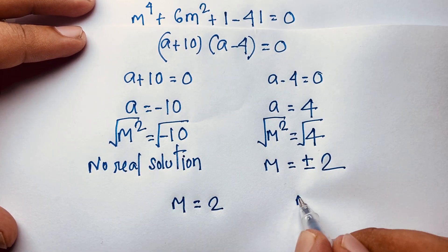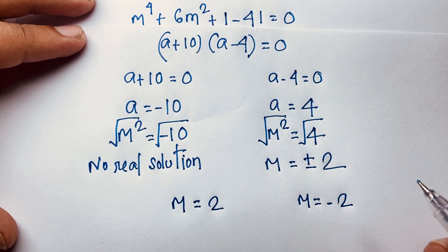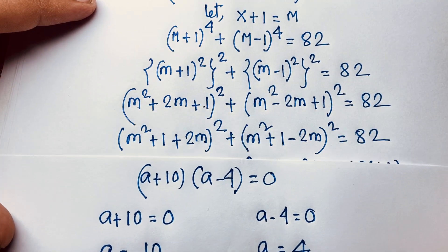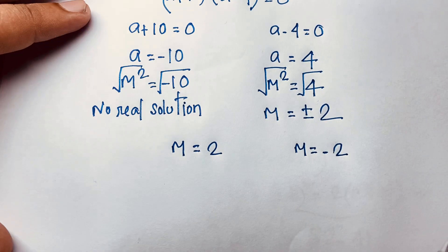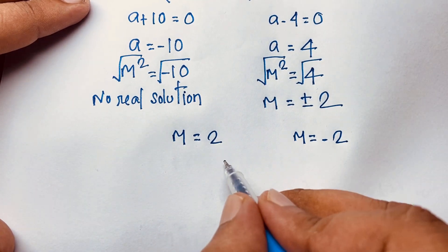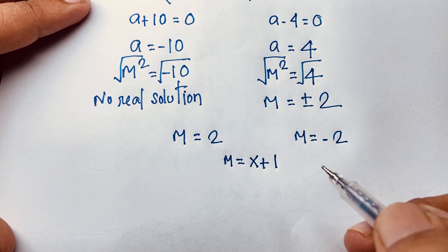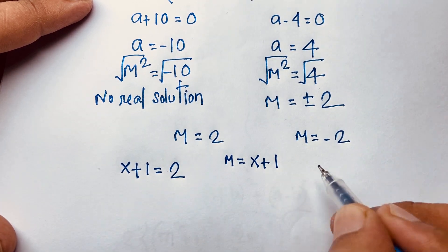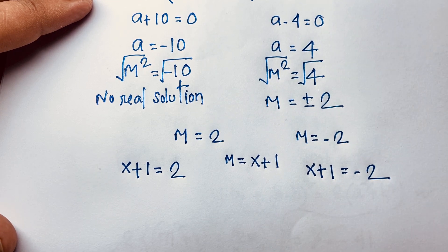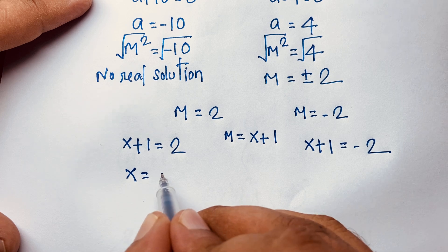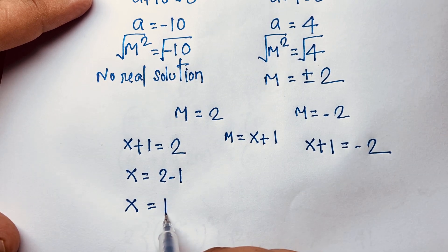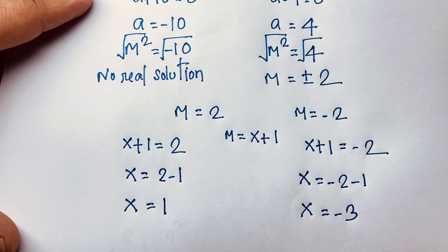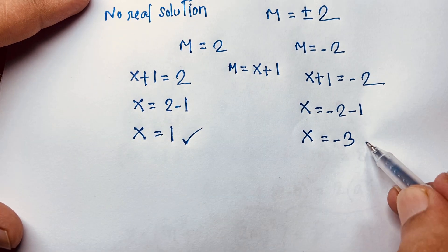So m = positive 2 and m = negative 2. Now recall and remember that m = x + 1, which we let earlier. Putting this value in: x + 1 = 2, and also x + 1 = −2. So x = 2 − 1 = 1, and x = −2 − 1 = −3.